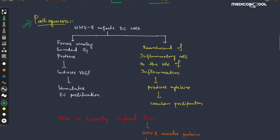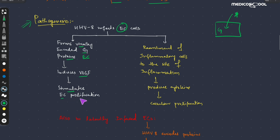When this virus infects the endothelial cells, it encodes virally encoded G proteins in those endothelial cells. These G proteins induce the vascular endothelial growth factors, which in turn stimulate endothelial cell proliferation, and thus produce Kaposi sarcoma. This is one mechanism by which it produces Kaposi sarcoma.